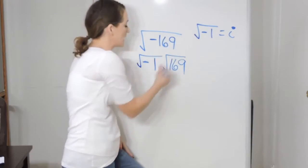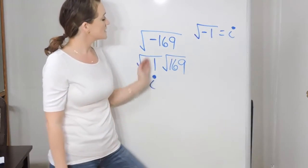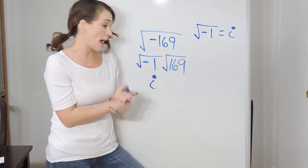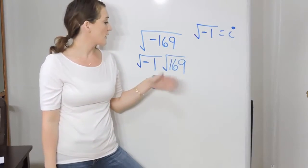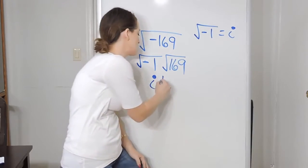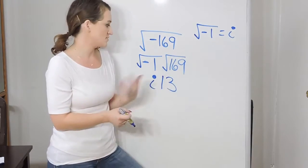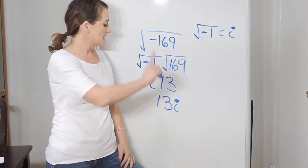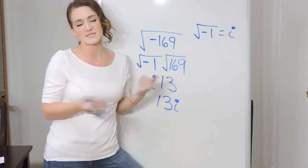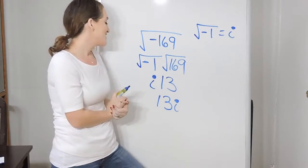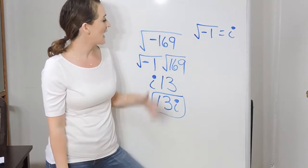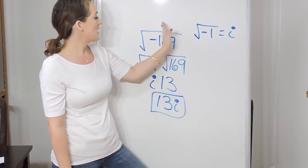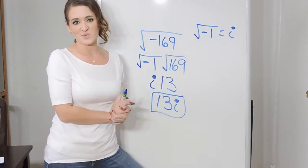So the square root of negative one is i, and then you just continue and simplify the square root of your number just like you normally would simplify a radical. This one happens to be a perfect square — the square root of 169 is 13, since 13 times 13 is 169. Instead of writing i13, we write 13i. That's just considered simpler and prettier looking. So our solution would be 13i. We just remove the negative, that turns into an i, and then we simplify the other number as we normally know how.